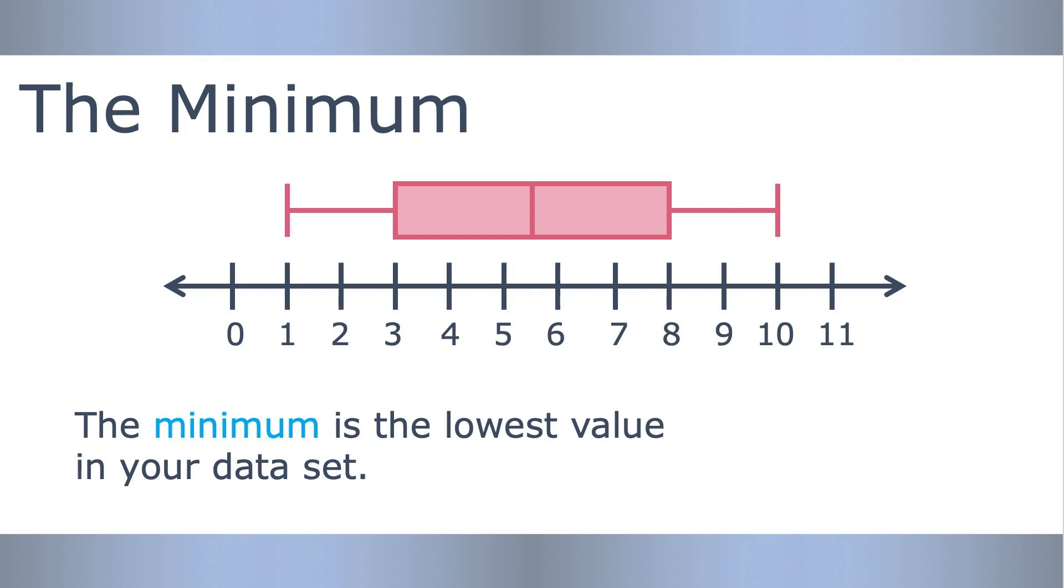The minimum is the lowest value in your data set. In this example, the minimum is 1. That means the lowest value in this data set is 1.